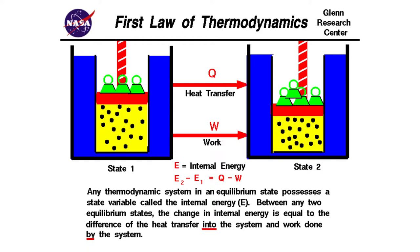Between any two equilibrium states, the change in internal energy is equal to the difference of the heat transfer into the system and work done by the system. When the heat energy flows into a system it gets transferred into chemical energy, mechanical energy, or various other forms. Heat energy gets transferred to mechanical work — some sort of energy can be generated from this heat energy. This finds application in various industries.